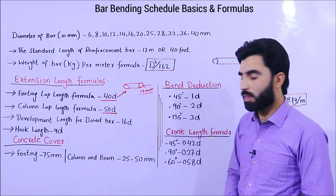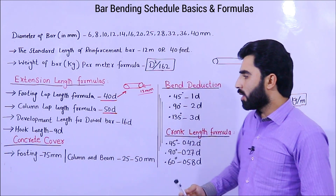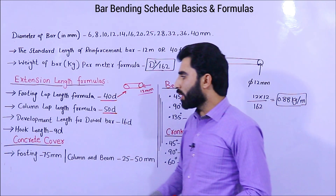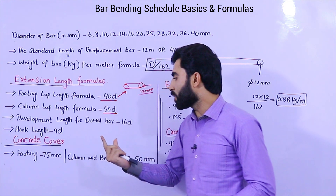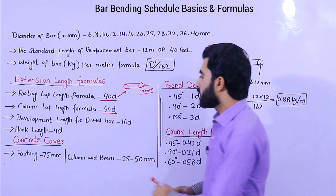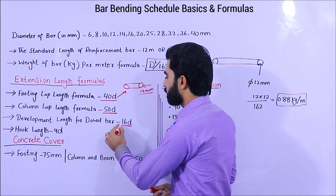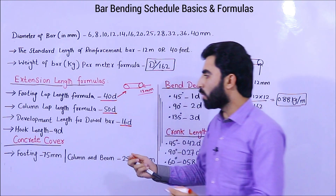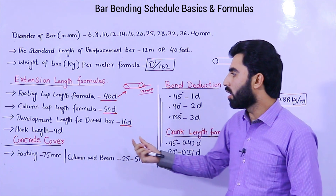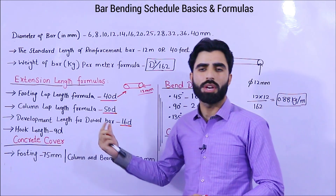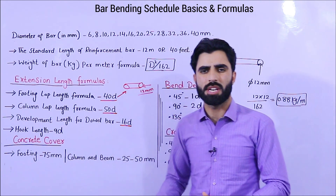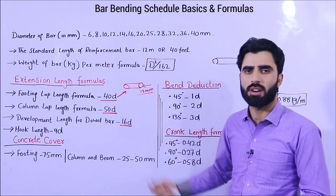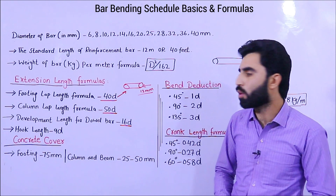The next one is development length for double bar, which is 16D. This refers to the legs at the bottom of a column.